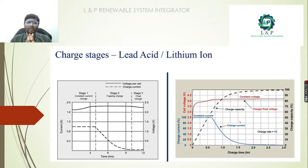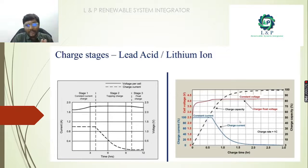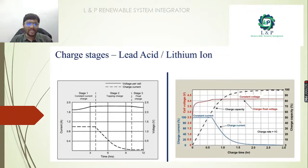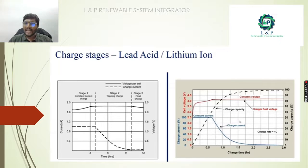There are several charging states. Stage one is constant current charge, stage two is the topping charge, and stage three is the float charge. This is how the basic charging process happens in lead acid and lithium-ion batteries.